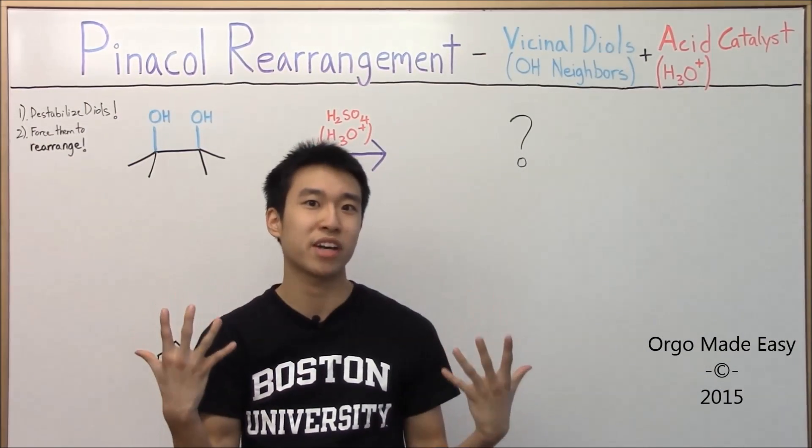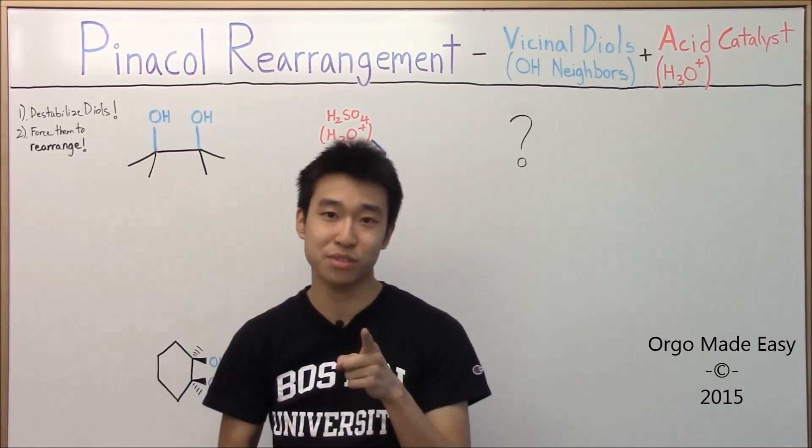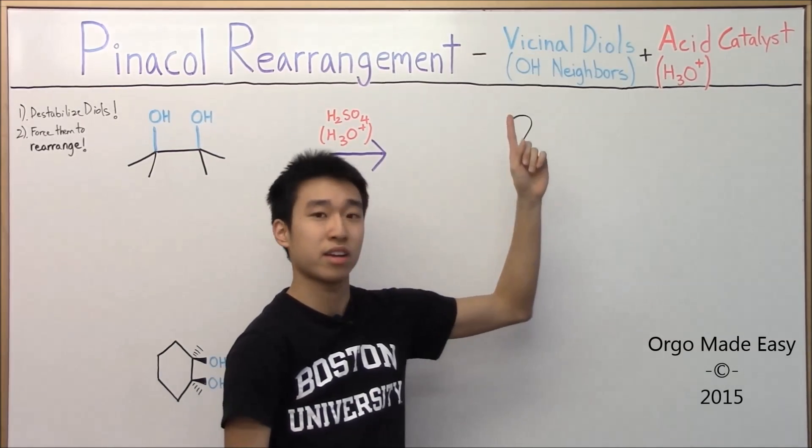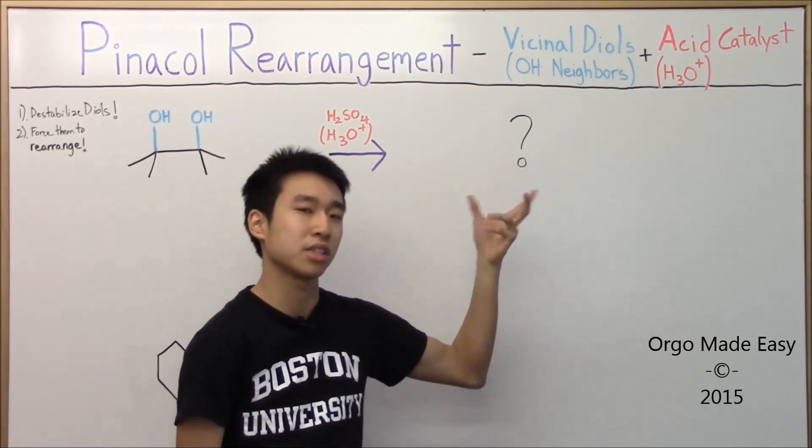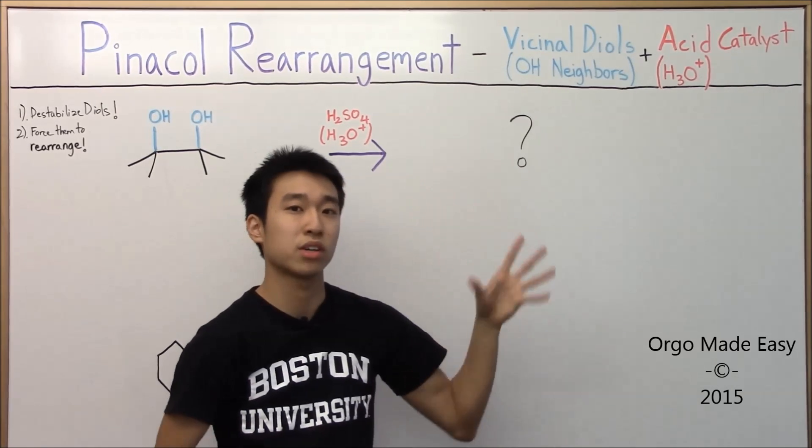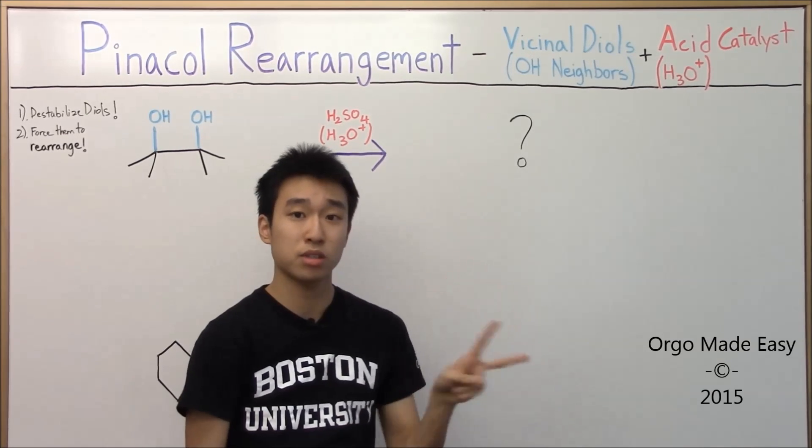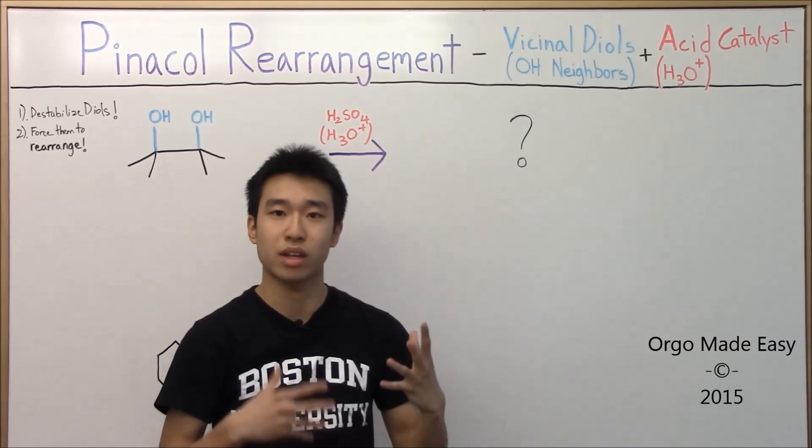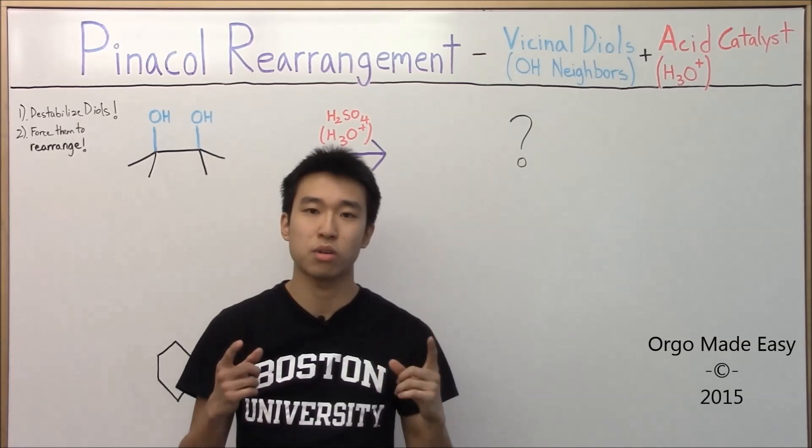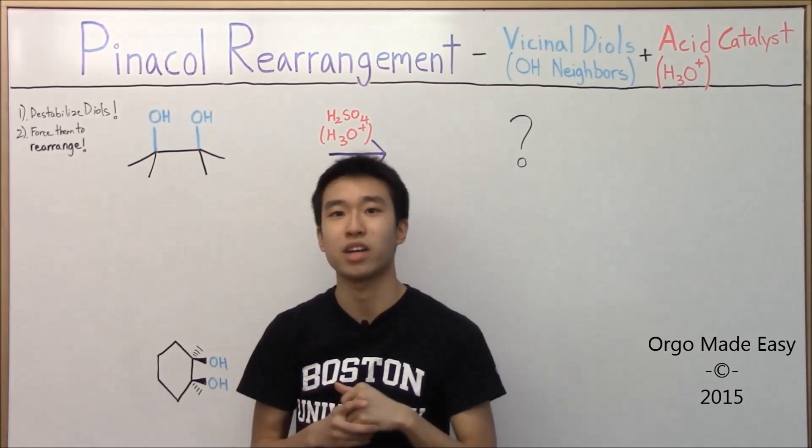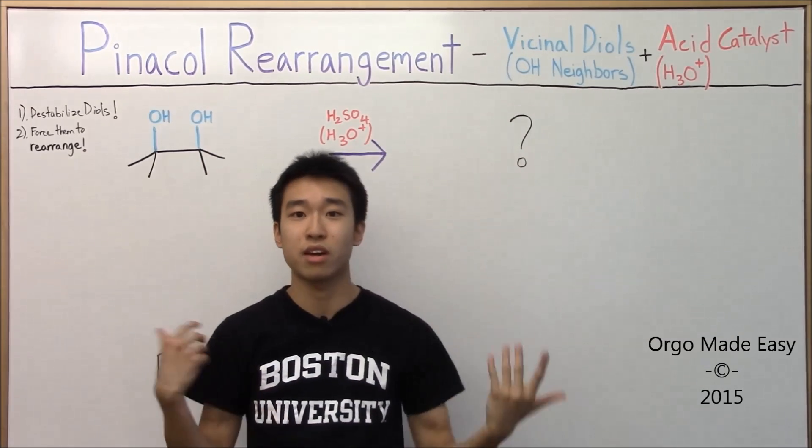Ready to begin? Alright, so first, how do we even recognize the Pinacol Rearrangement? So the key thing that you guys need to look for is a vicinal diol and an acid catalyst, just like over here. Now you might be wondering, what does vicinal diol really mean? Vicinal is a word that you hear a lot in orgo, but let's focus on the diol part first. So di means two, ol stands for like alcohol, so two alcohols, and then the vicinal part just means that the two alcohols are on neighboring carbons.